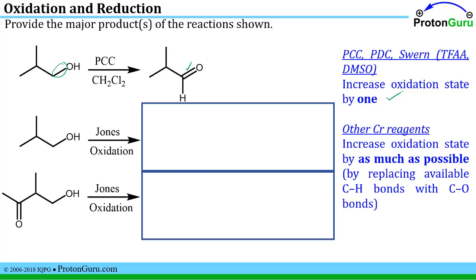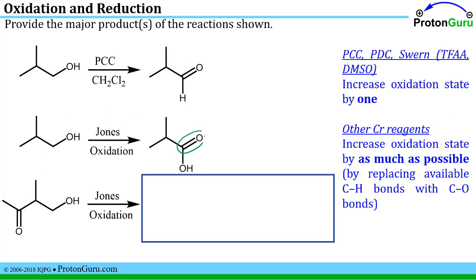If we take the same starting material and instead do the Jones oxidation — chromium trioxide with sulfuric acid — the Jones oxidation increases the oxidation state by as much as possible. There are two hydrogens on the alcohol carbon, so we need to make two new bonds to oxygen. The original oxygen can only accommodate one more bond due to the octet rule; the oxidizing reagent provides another OH from its CrO3. The result is three total carbon-oxygen bonds instead of the original one.